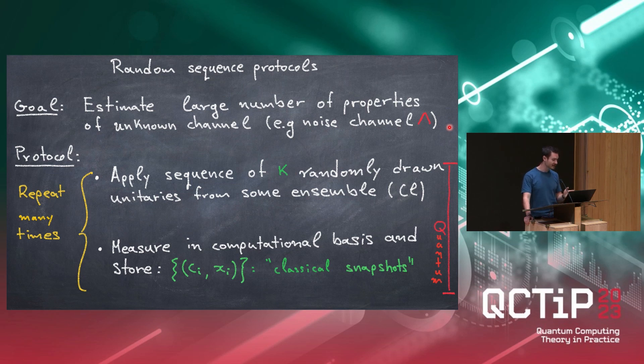You basically do what you do in randomized benchmarking and just apply sequence of randomly drawn unitaries from some ensemble. Again, just think of the Cliffords maybe. And now instead of doing this inversion thing that we talked about before, you just measure in the computational basis and do what you would do in classical shadows. You just store these classical snapshots, these tuples of the random Clifford, which now is a sequence of Cliffords and the measurement outcome. So basically, this is all you do on your quantum device. This is all you would do on your experiment and everything else is now done in classical post-processing.